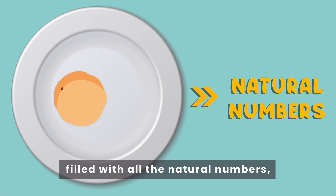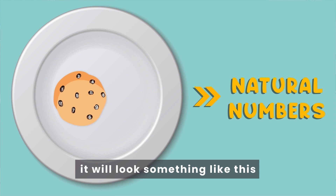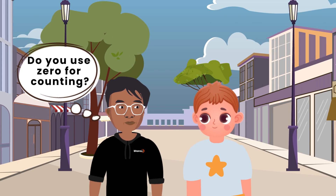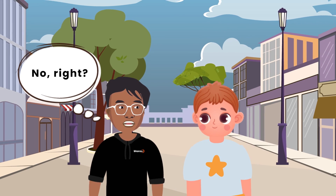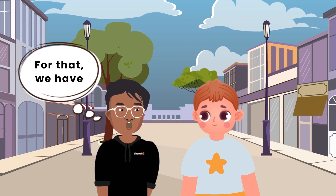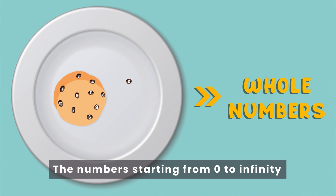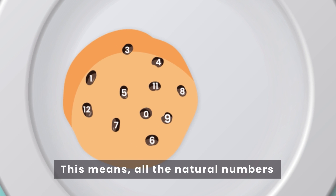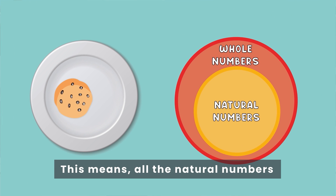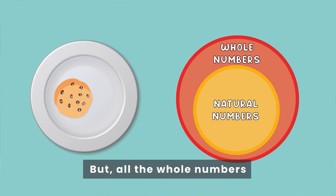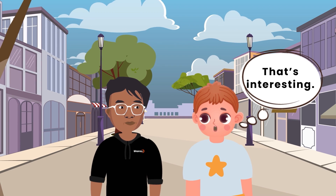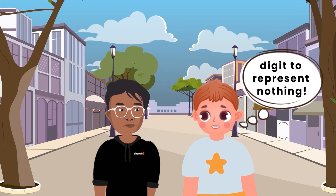Imagine a big circle filled with all the natural numbers — it will look something like this. Oh, and what about zero? Do you use zero for counting? No, right? For that, we have whole numbers. The numbers starting from zero to infinity are called whole numbers. Now our circle looks like this. This means all the natural numbers are whole numbers, but all the whole numbers are not natural numbers. That's interesting — so we officially have a digit to represent nothing?